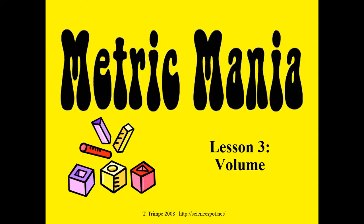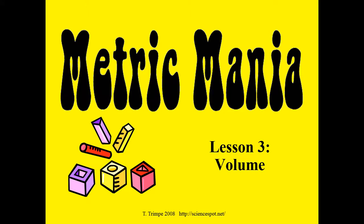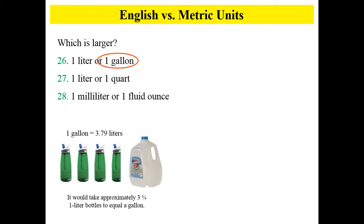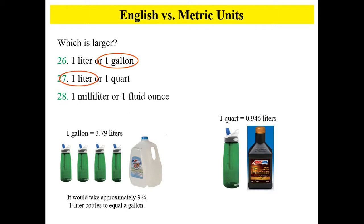Our final lesson on the metric system is about volume. Let's compare English to metric units. Which is larger, one liter or one gallon? If you said one gallon, you're correct — a gallon is equal to 3.79 liters. This picture shows water bottles that each hold one liter, and this shows one gallon. One liter or one quart? One liter is larger than one quart — one quart equals 0.946 liters, so they're almost the same, but a liter is slightly larger.